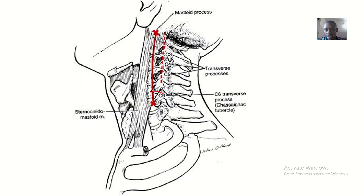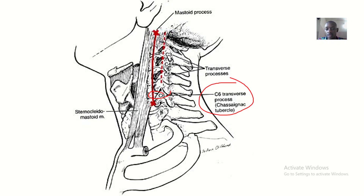This is the C6 vertebra and this is its process. The process is lateral — it is a transverse process coming out laterally from C6, not directed toward the back.